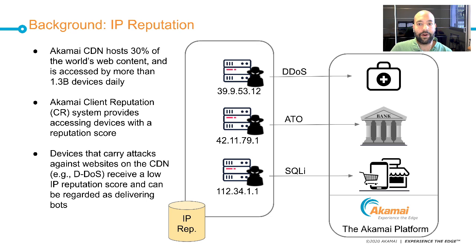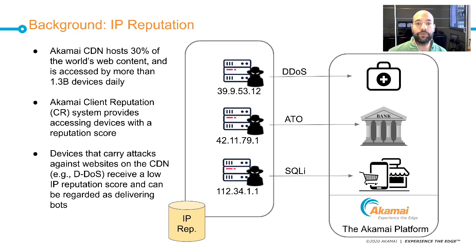Our systems at Akamai track IPs that communicate with websites on the CDN, and whenever these devices behave in a malicious manner, they get a poor IP reputation score. There is a single database in which each device that interacts with the websites receives a score based on its behavior. The Akamai CDN platform interacts with more than 1.3 billion devices per day, and for each one we record a score to identify potential bots carrying out attacks.